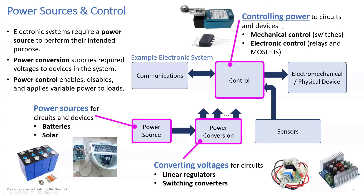For controlling power, you could think of a switch — a light switch on the wall controls power. Switches often contain some actuator or arm that contacts a physical object to turn things on and off mechanically. We're going to talk about electronic control using a MOSFET — a metal-oxide-semiconductor field-effect transistor — which you're using in lab. We'll also look at relays: electromechanical control that opens and closes a switch using an electromagnet.